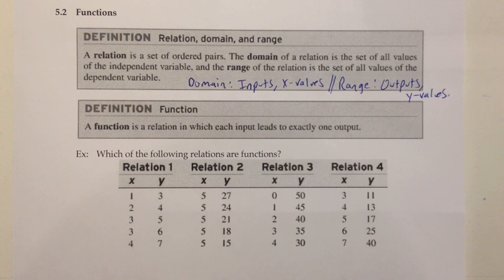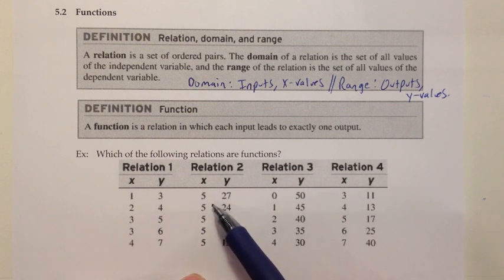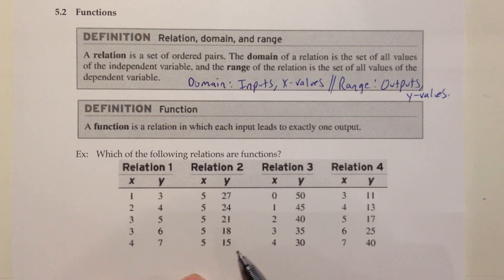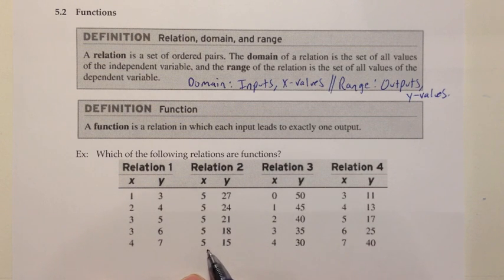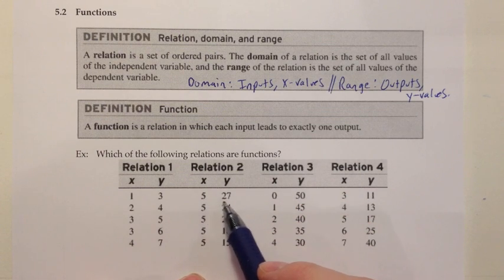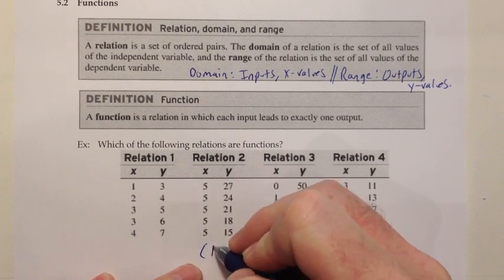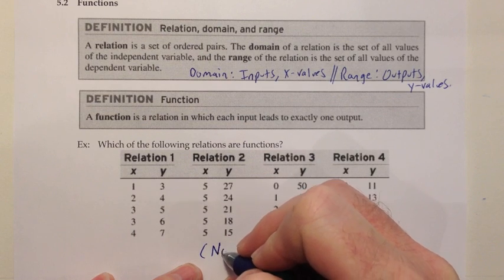Relation 2 is not a function, because if I ask where does 5 go, there are many answers. You'd say, well, which 5? This 5 goes to 27, but this 5 goes to 21. If it's really a function, there's only one answer. As soon as I see that one input leads to many different outputs, I have to say no — this is not a function.